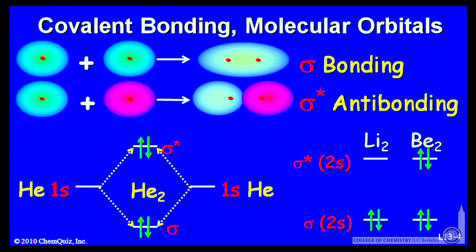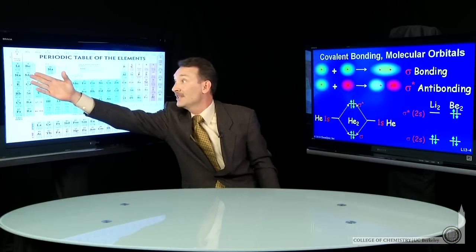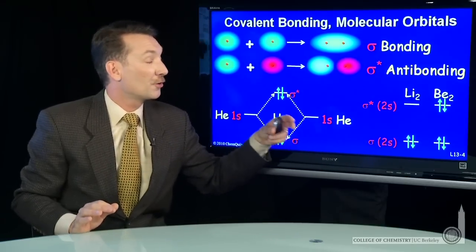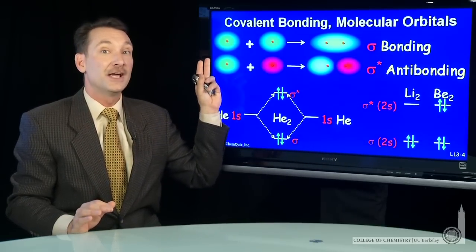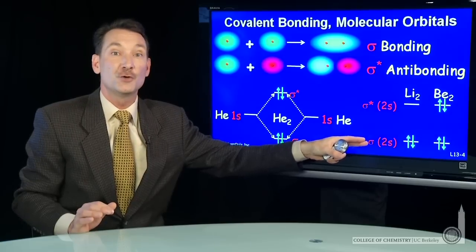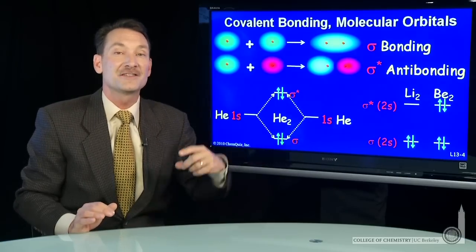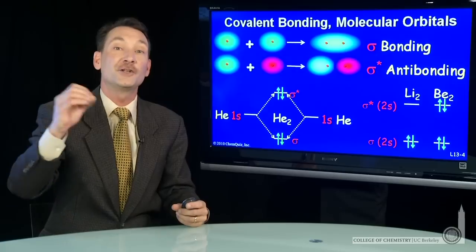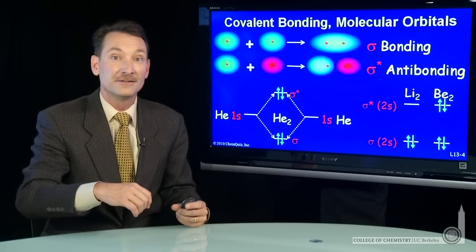You can continue though and look at lithium. If I go across the periodic table, let's look at lithium. Now I'm looking at a 2s electron. I can take the 2s orbitals and use this same procedure: add and subtract them to take a linear combination, form a sigma 2s and a sigma 2s star antibonding orbital. Those molecular orbitals are filled with the electrons from lithium.